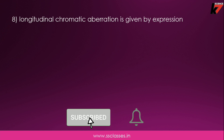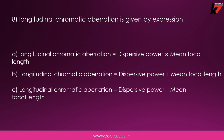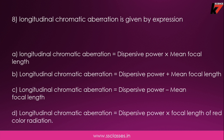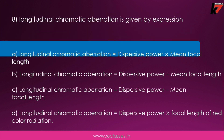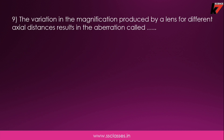Eighth question: longitudinal chromatic aberration is given by which expression? You have to remember which is the correct formula for this particular type of aberration. Option number one is correct — the expression is dispersive power multiplied by mean focal length.